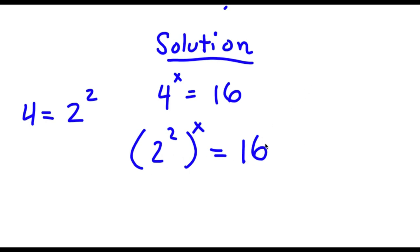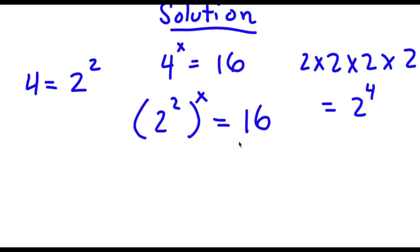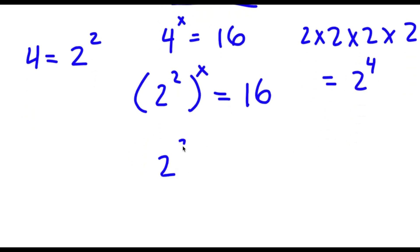So, 2 to the power of what is equal to 16? Well, 2 times 2 is 4, 4 times 2 is 8, and 8 times 2 is 16. So we have four 2's, meaning this is the same thing as 2 to the power of 4. So now I have 2 squared to the power of x is equal to 2 to the power of 4.